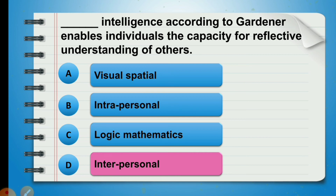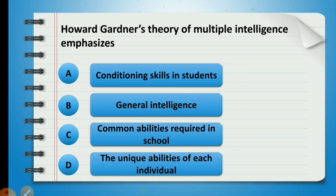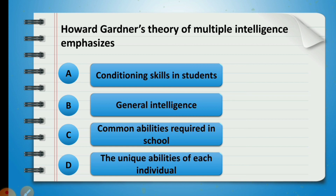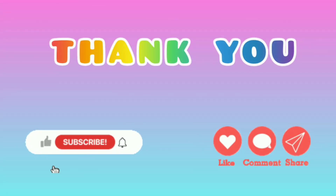Next question: Howard Gardner's theory of multiple intelligences emphasizes — A) school performance, B) general intelligence, C) common abilities required in school, or D) unique abilities of each individual. Howard Gardner's theory emphasizes the unique abilities of each individual. Please subscribe, like, and share this video.